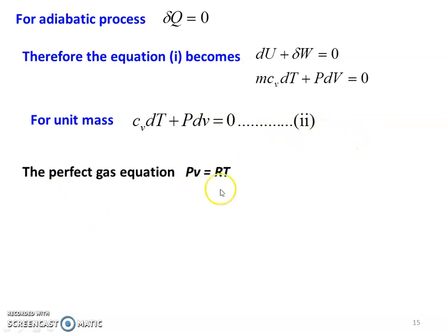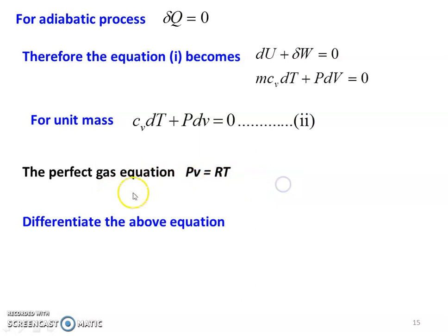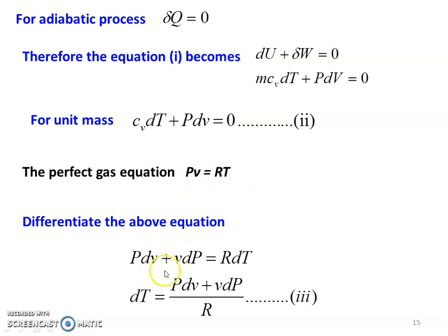Using the perfect gas equation: pv equals RT for unit mass. Differentiating both sides, since both p and v are random variables: p·dv plus v·dp equals R·dT. Therefore, dT equals (p·dv plus v·dp) divided by R. This is equation number 3.